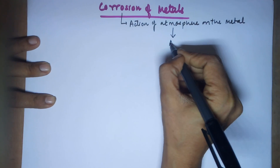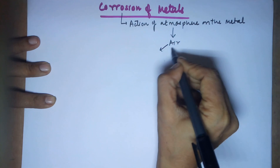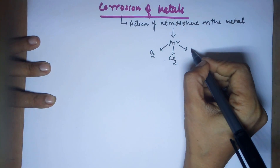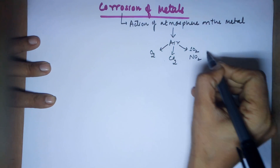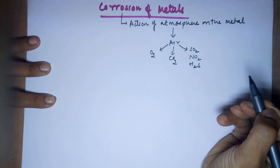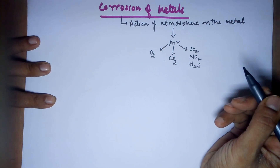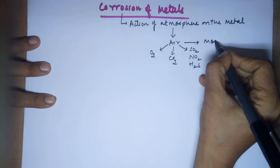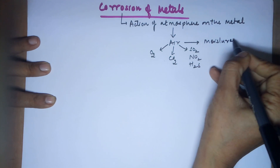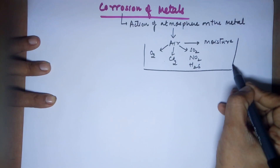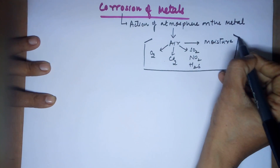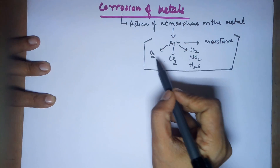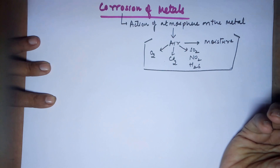When we talk about atmosphere, it is majorly air. The components of air can be oxygen, carbon dioxide, sulfur dioxide, nitrogen dioxide, and H₂S — these are the gases available in the atmosphere. Of course, not to forget, you also have moisture. So the conclusion is that action of atmosphere is when your metal is undergoing some kind of reaction with either of these gases or moisture.